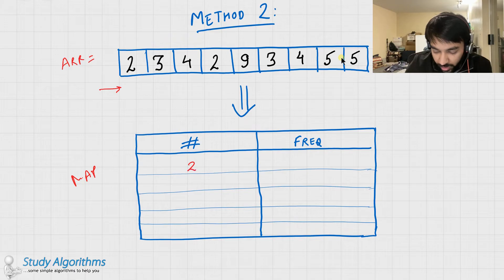So you get the number 2, and its frequency is 1. You get the number 3, and its frequency is 1. Number 4, 1, then you get 2 again. So now you would update this frequency to 2.